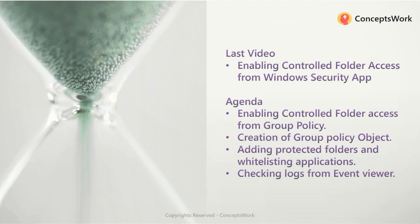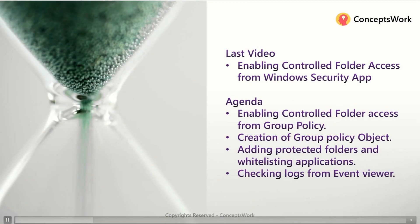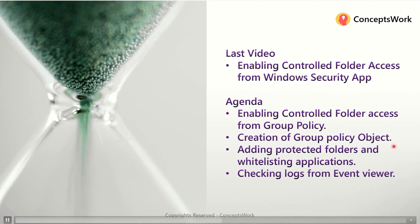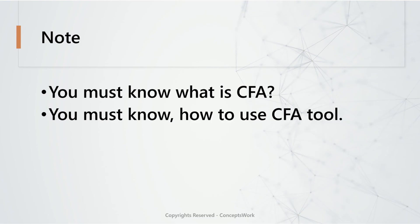If you're watching the series from the beginning, in the last video we discussed about enabling controlled folder access from the Windows Security app. In this video I'm going to showcase all the options related to group policy object creation, which includes adding protected folders, whitelisting applications, and then checking logs in Event Viewer as well as on the MDE portal.